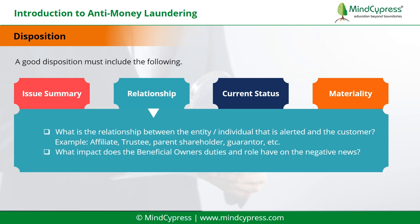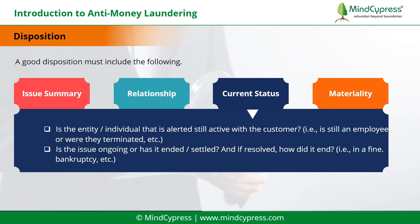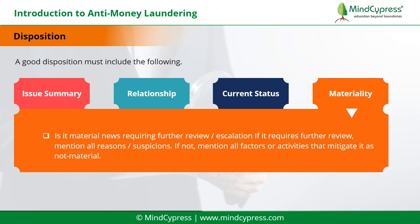What is the relationship between the entity or individual that is alerted and the customer — for example, affiliate, trustee, parent, shareholder? What impact does the beneficial owner's duties and role have on the negative news? Is the entity or individual still active with the customer — still an employee or were they terminated? Is the issue ongoing or has it ended, settled, and if resolved, how did it end — fine, bankruptcy, etc.? Is it material news requiring further review? If it requires escalation and further review, mention all reasons and suspicions. If not, mention all factors or activities that mitigate it as not material.